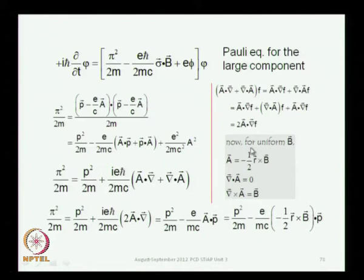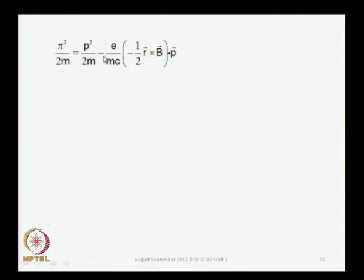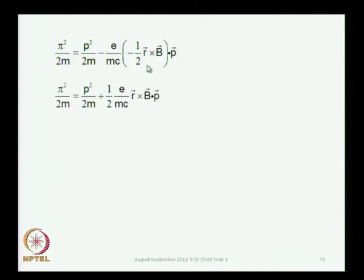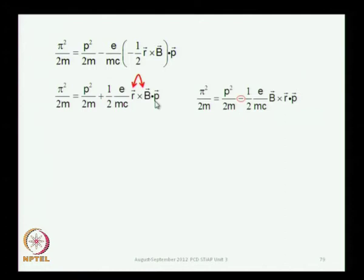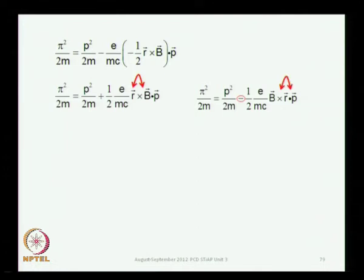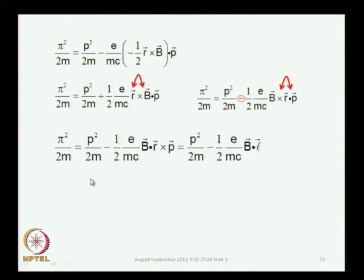This is straightforward electrodynamics. Putting these two terms in place of π²/(2m) in the Pauli equation, you have a minus sign here and a minus sign there giving a plus sign, and r×B can be written as -B×r. Then you have the scalar triple product B×r·p, and you can interchange the dot and the cross to get B·(r×p), which is the B·L operator — the orbital angular momentum.